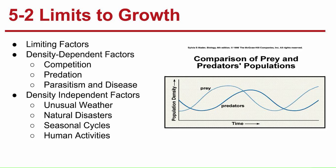Section 5-2: Limits to Growth. These limits to growth are what cause the S-curve and are the reason for the carrying capacity. Limiting factors are factors that cause population growth to decrease, and there are two main kinds: density-dependent factors and density-independent factors.